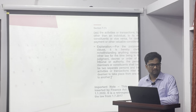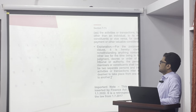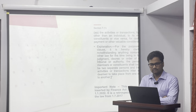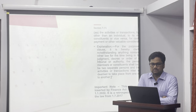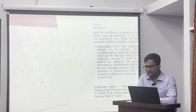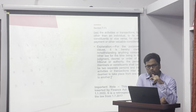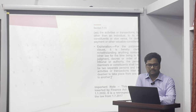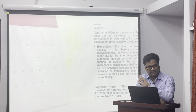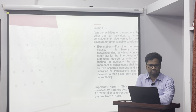Now we move to the next clause of Section 7, subsection 1, clause AA. The activities or transactions by a person other than an individual — so from the person definition, you remove individual — by a person other than an individual to its members or constituents, or vice versa, members to the person.